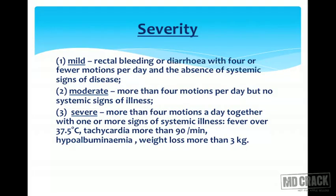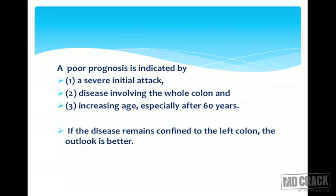Regarding severity: in mild ulcerative colitis, there will be rectal bleeding or diarrhea with four or fewer motions per day and no systemic signs of disease. In moderate disease, there will be more than four motions per day but no systemic signs of illness. In severe disease, there will be more than four motions per day together with one or more systemic signs: fever over 37.5°C, tachycardia more than 90 beats per minute, hypoalbuminemia, or weight loss more than 3 kilos. Poor prognosis is indicated by severe initial attack, disease involving the whole colon, and increasing age especially after 60 years.